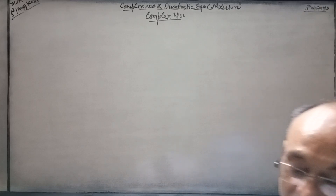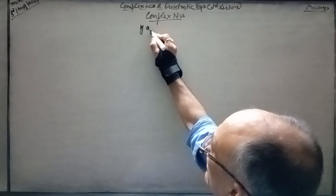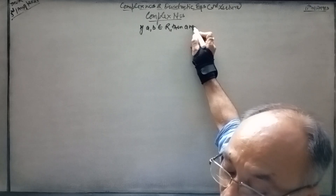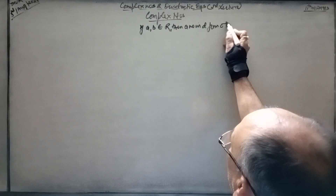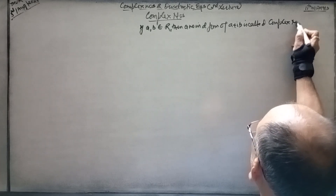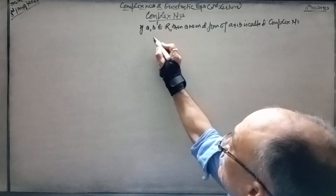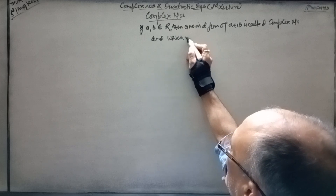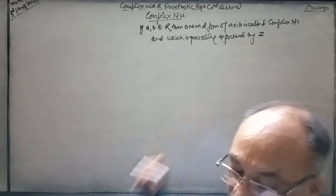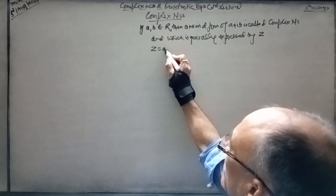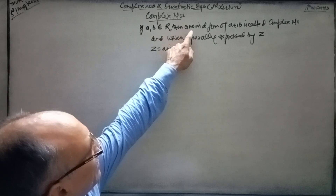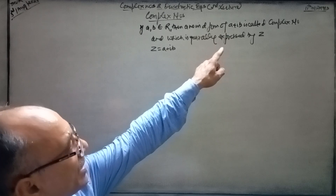Now, complex numbers. If small a and small b belong to R, then a number in the form of a plus ib is called a complex number, which is generally expressed by small z. A number in the form of x plus iy is also called a complex number.